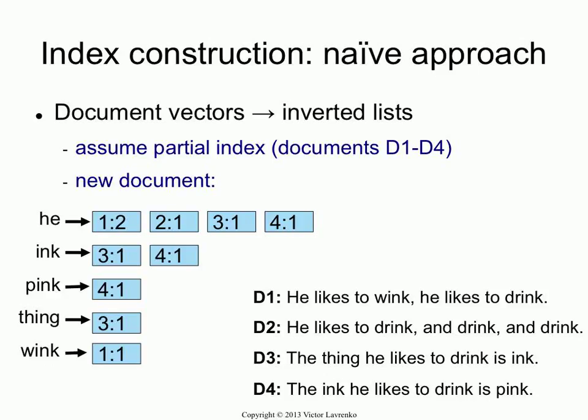Let's talk about the obvious way, and hopefully this is the way you're doing it for the coursework. Let's say I have already built a part of my index — I've seen documents 1 through 4. This is the inverted index I built. It's a regular index, not positional — you're just storing frequencies. So the word 'he' occurs in every document, and the word 'pink' only occurs in document 4, once.